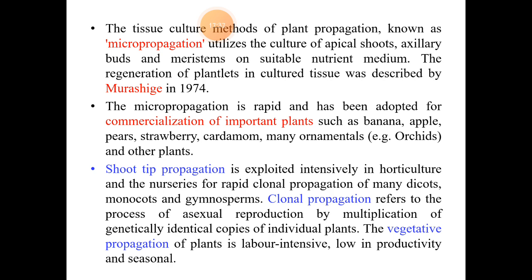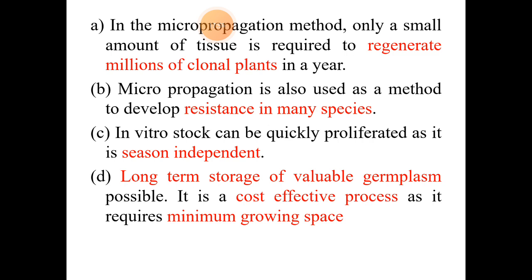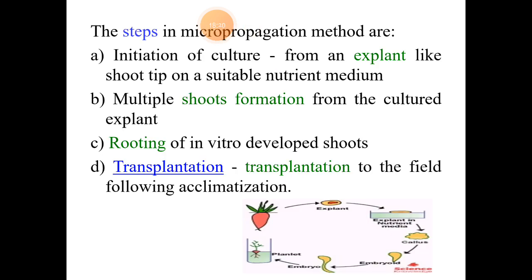Later, scientists used shoot tip propagation, clonal propagation, and vegetative propagation methods. Micropropagation uses a very small amount of tissue to generate millions of clonal or similar plants. Disease-resistant plant varieties are cultured here. The long-term storage of valuable germplasm is done by using this cost-effective method. Various steps involved in micropropagation are as follows.